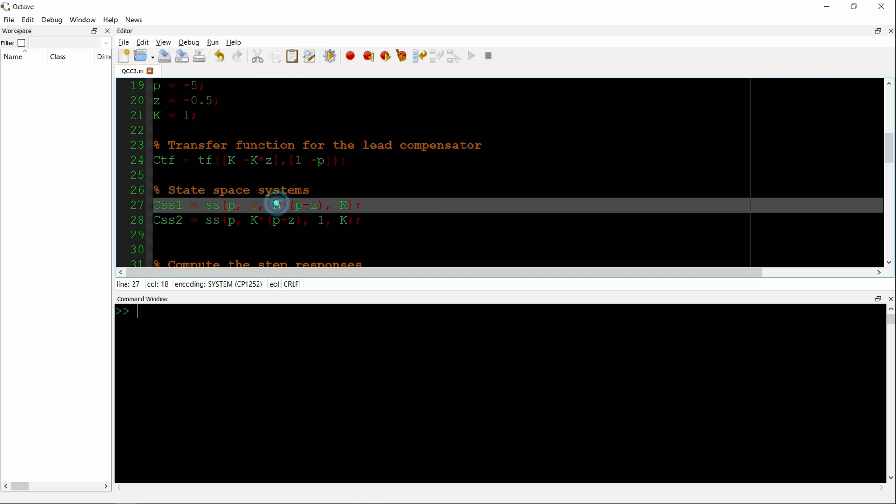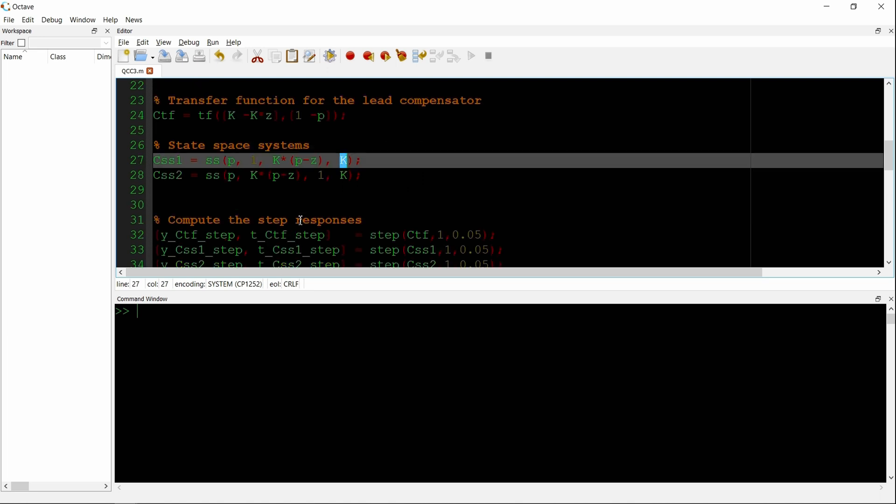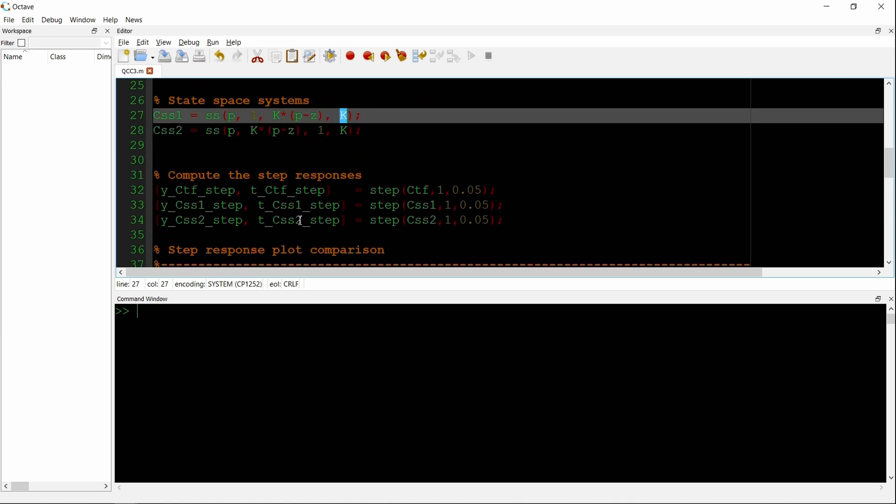We're making two state-space objects according to what we created earlier. The A, the B, the C matrix, and the D matrix for the first state-space system with the first approach. And then the second approach that also yielded a state-space system but with different B, C, and D matrices.